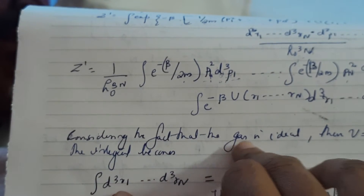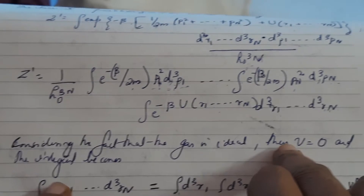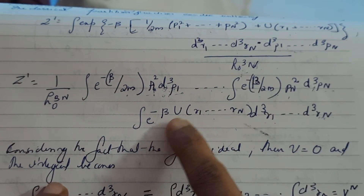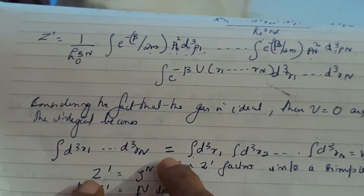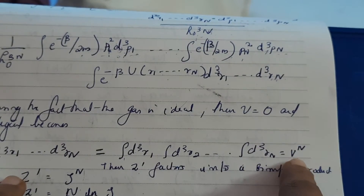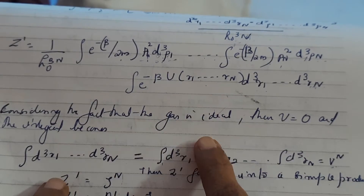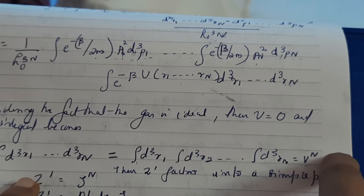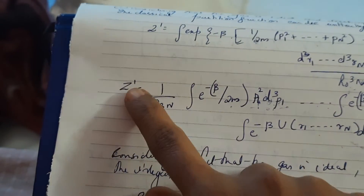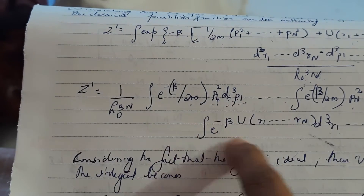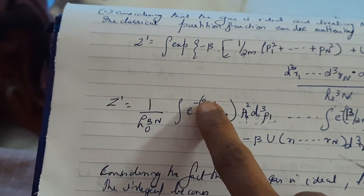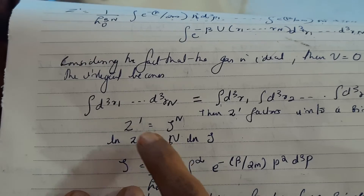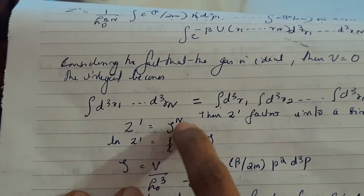Considering the fact that the gas is ideal, the potential energy U equals 0. When U is 0, e raised to minus beta times U becomes 1. Then this part of the integral becomes just 1, and when you multiply all these you will get V raised to N — one integral gives one volume, so N times gives V^N. Now if I write the total partition function, the potential energy terms give V^N and the remaining common term does not change. So I can write this partition function in general form as τ raised to N.